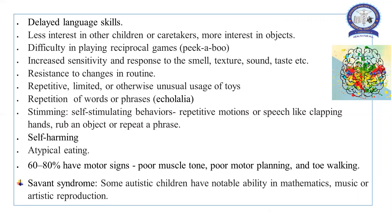Other features include difficulty in playing reciprocal games like peekaboo, increased sensitivity and response to smell, texture, sound, and taste. The child is very resistant to changing routines and likes to engage in repetitive, limited, and unusual uses of toys. The child has echolalia — repetition of words or phrases. Stimming is a very important behavior in autistic children, that is self-stimulating behavior such as repetitive motions or speech like clapping hands, rubbing objects, or repeating a phrase.